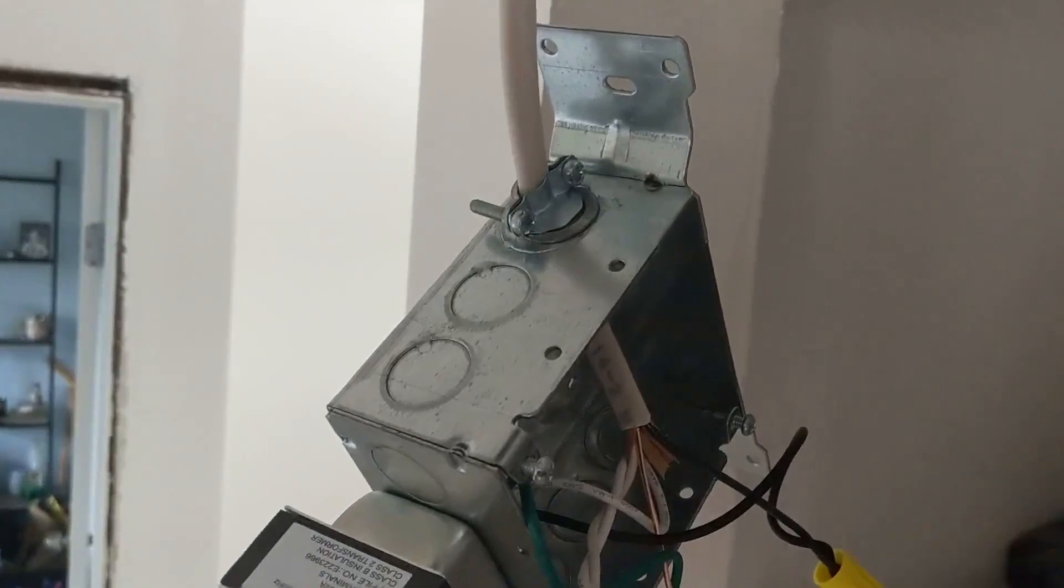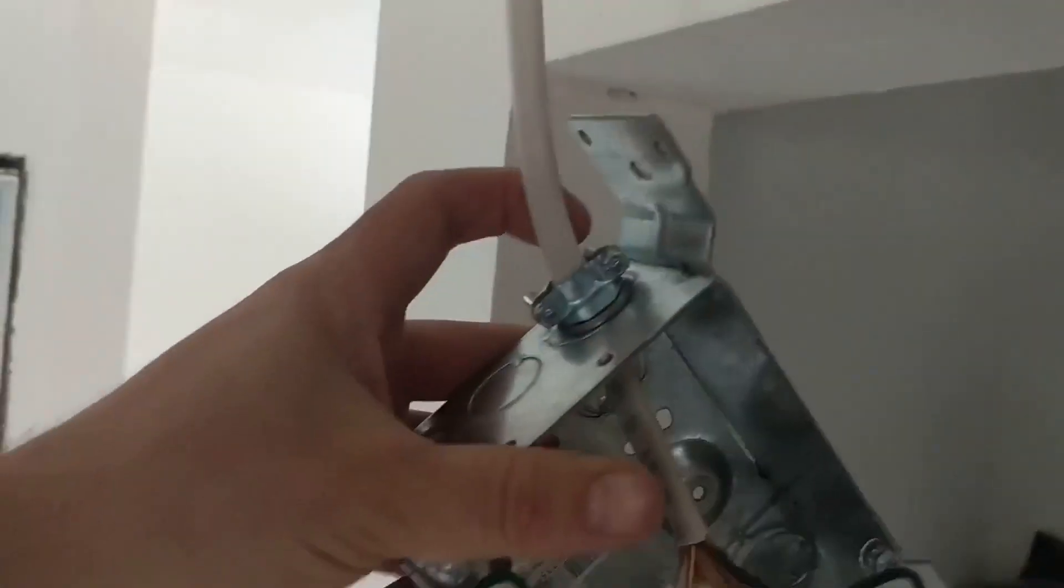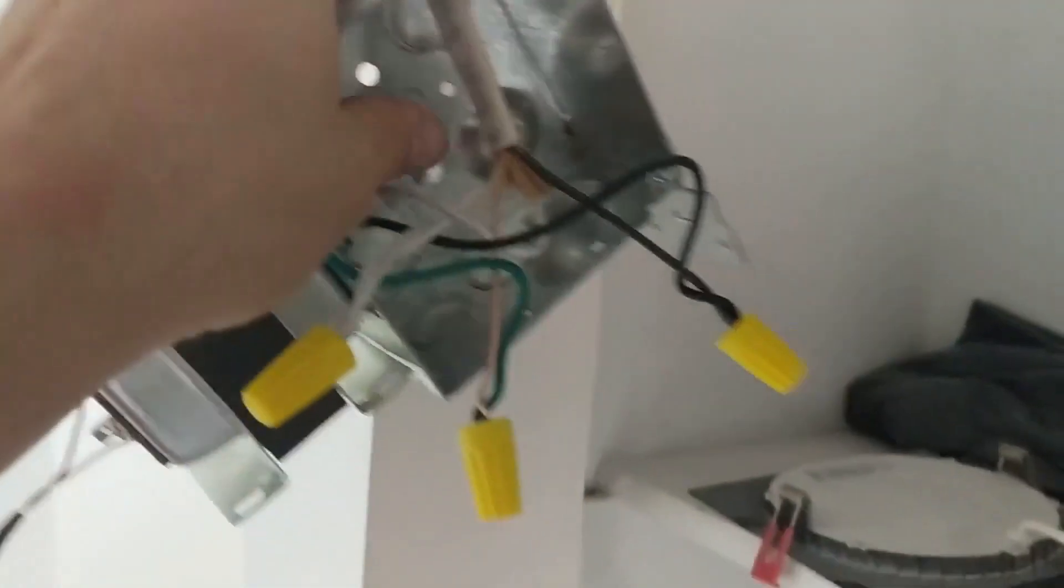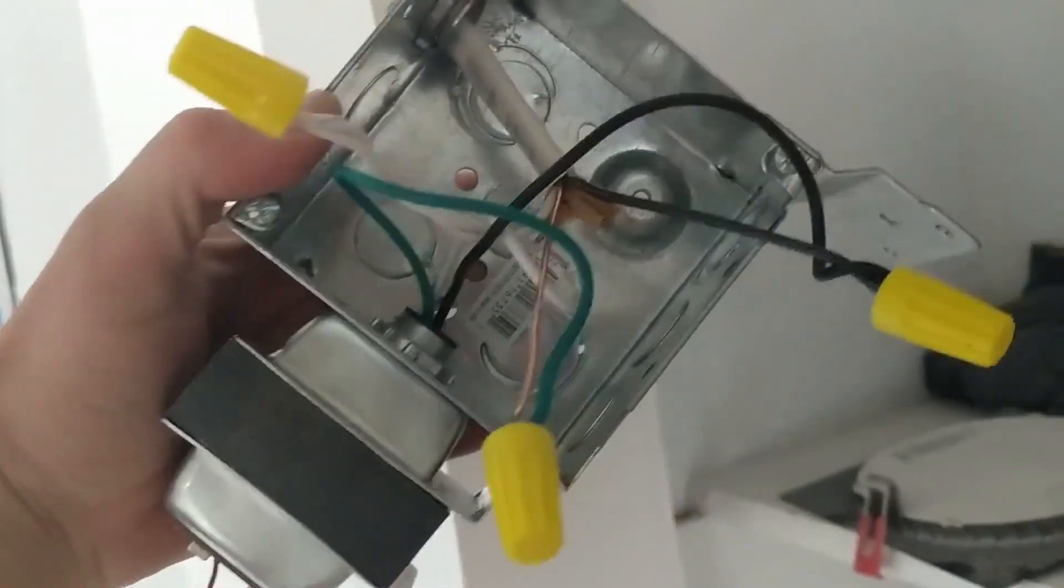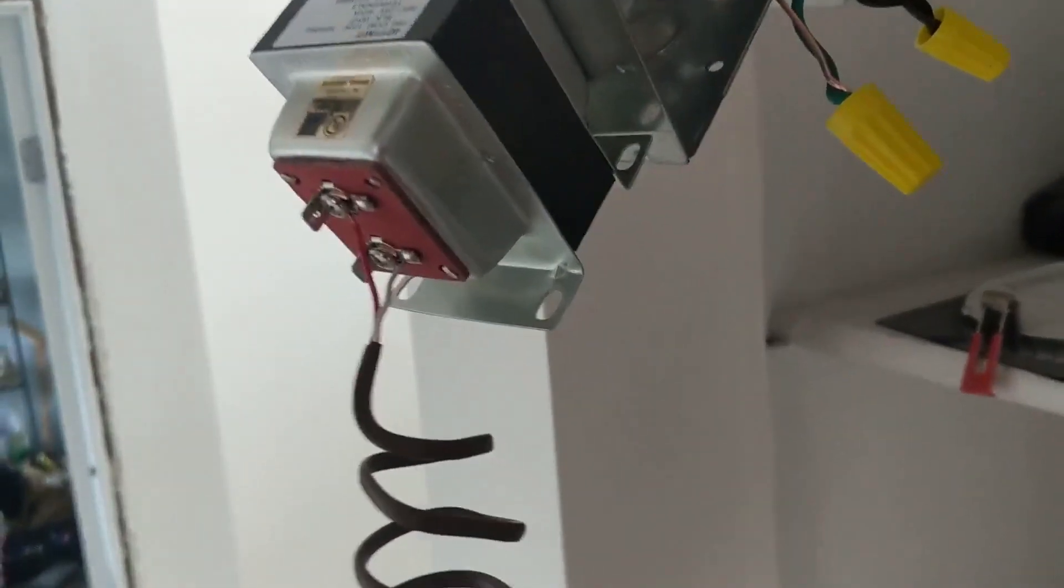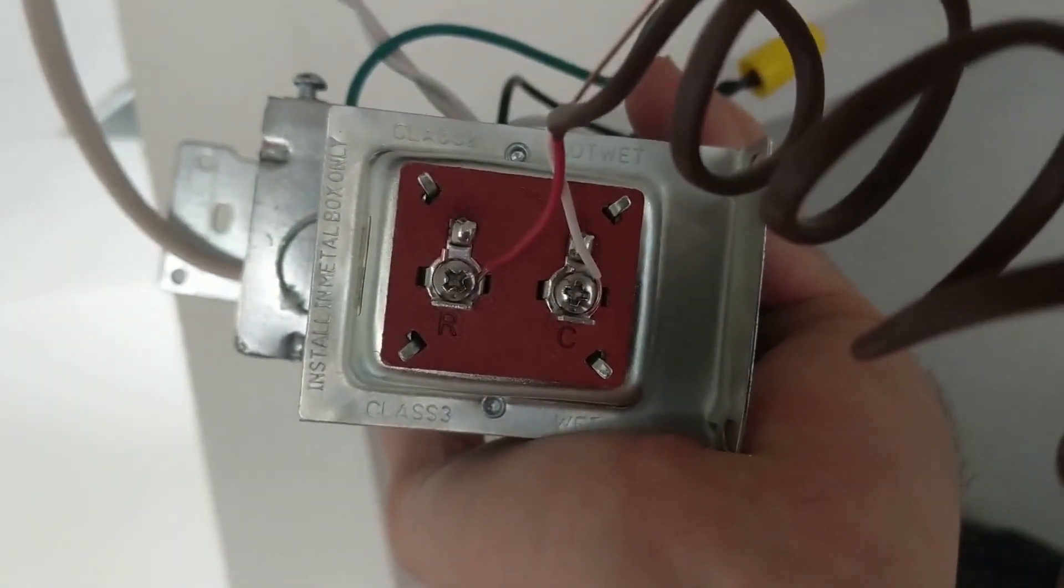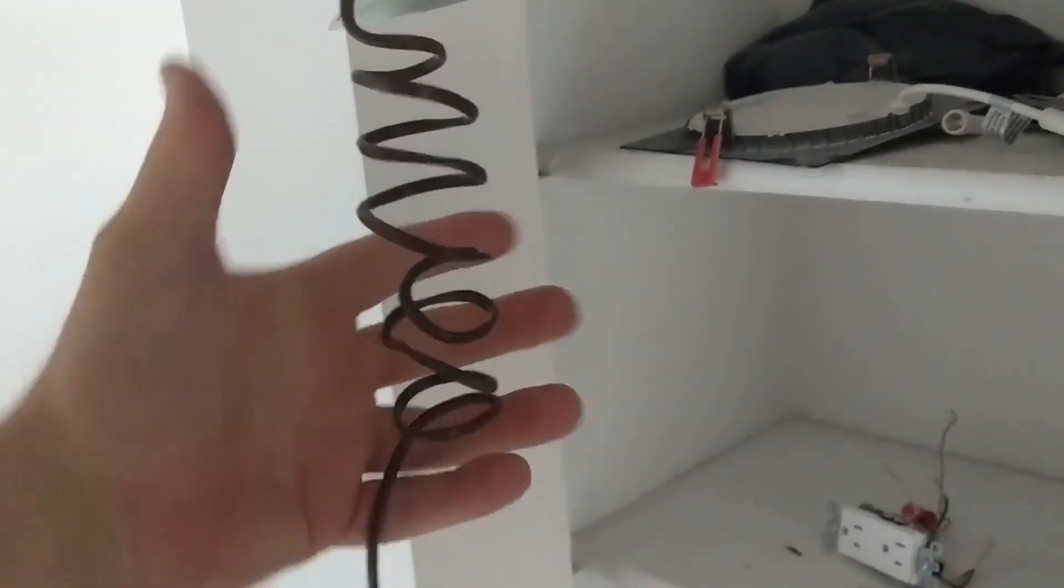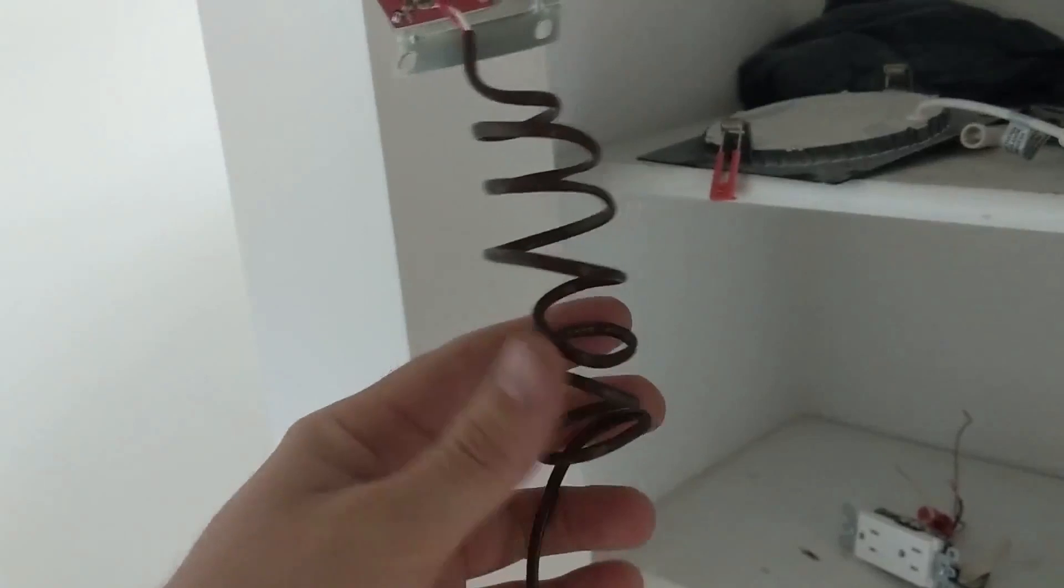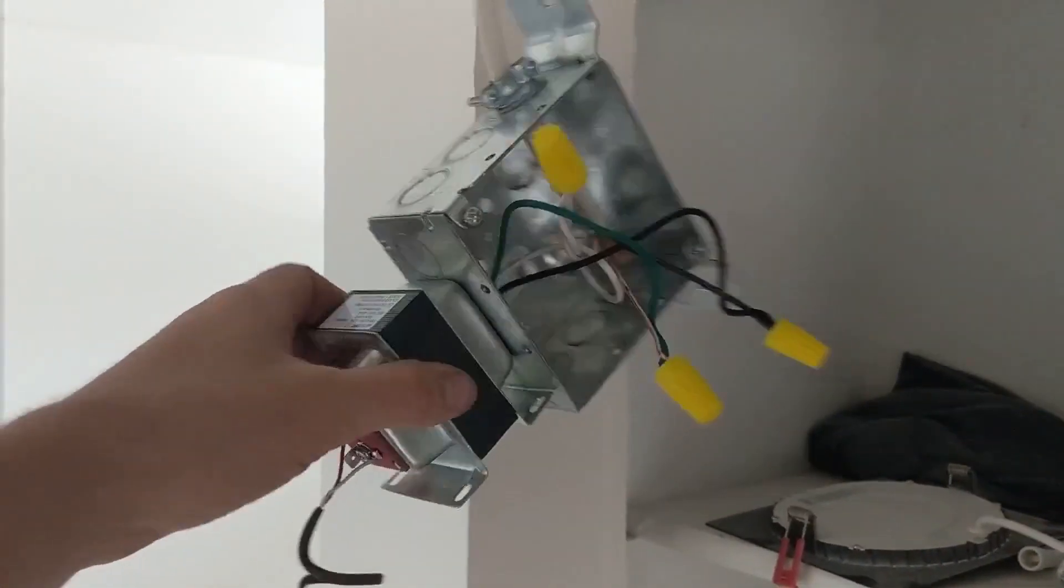Now for the wiring - we've got that little clamp so it doesn't pull out. White to white, green to ground, black to black. I typically ground these boxes, but since this is a 24-volt transformer in the attic, nobody's going to touch it, not a big deal. Red R and white to C. I always like to leave a little squiggle so if this gets pulled there's plenty of wire and it doesn't tear.